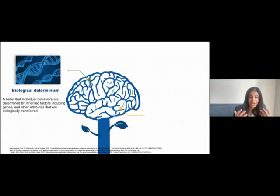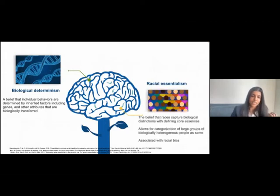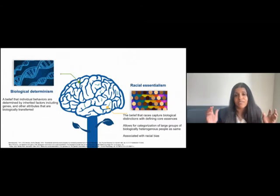This is upheld by two things many of us have been subject to in terms of what we were taught. First is biological determinism, the problematic belief that all of our behaviors are determined by inherited factors. The second is race essentialism, the belief that races capture true biological differences with defining core essences.